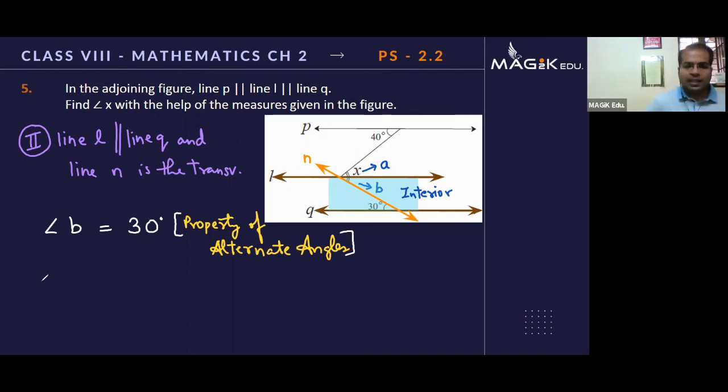My x which I was thinking about in the starting is made of two parts. I made it from a and b. Now I know a is 40 degrees and b is 30 degrees. With that, angle x is 70 degrees. We have to find x, and we've found it. Final answer in the box, and with that we complete exercise 2.2.